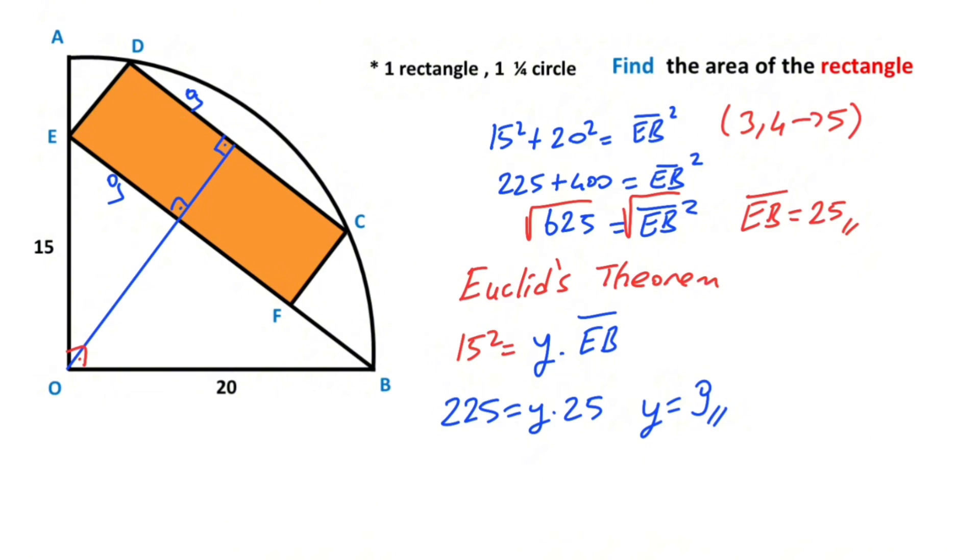So these are also 9 units. Then if you focus on this triangle, notice that this triangle is a 9-12-15 special right triangle, so this length must equal 12 units.